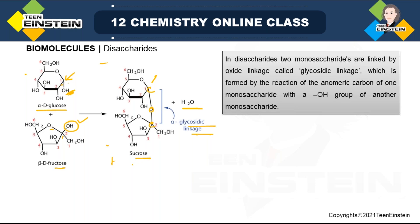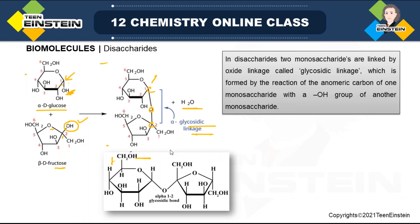The new structure formed after the glycosidic bond formation is sucrose. It is mostly drawn with the five-membered ring (fructose) rotated, so that the glucose part is on the left and the fructose part is on the right. To move from one representation to the other, you only need to change the orientation of the five-membered ring. The six-membered ring (glucose) part stays the same, with carbons numbered 1 through 6.